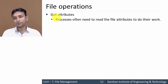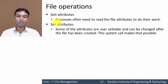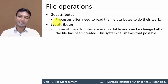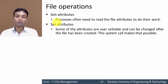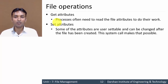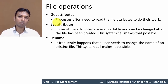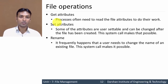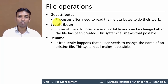The tenth operation is set attribute: some attributes are user-settable and can be changed after the file has been created; this system call makes it possible. When a user wants to change an attribute value, the set attribute operation is performed on the file. Finally, rename is used whenever it is required to change the name of a file. These are the various operations that can be performed on a file.